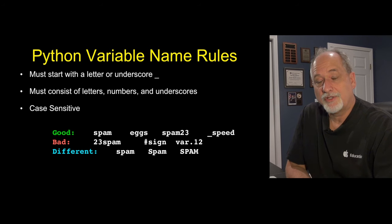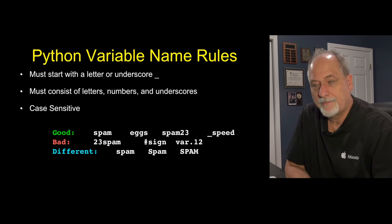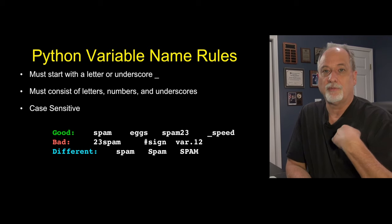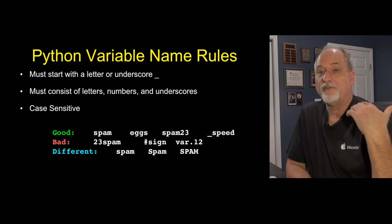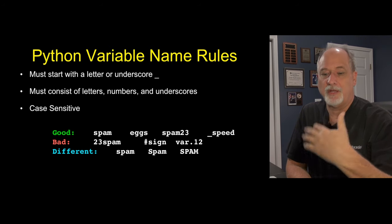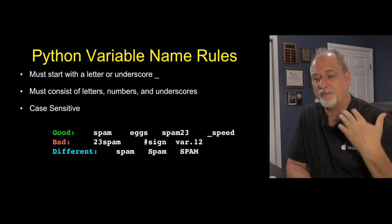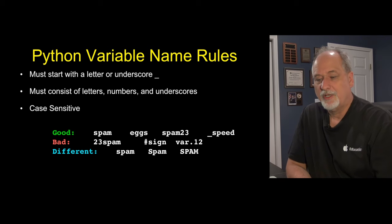There are some rules for making variable names. You can start with a letter or an underscore. We tend not to, as normal programmers, use underscore. We tend to reserve those for variables that we use to communicate with Python itself. So when we're making up a variable, we tend not to use underscores as the first character.